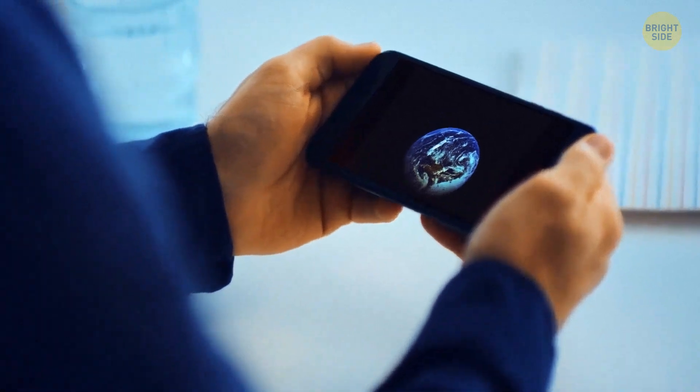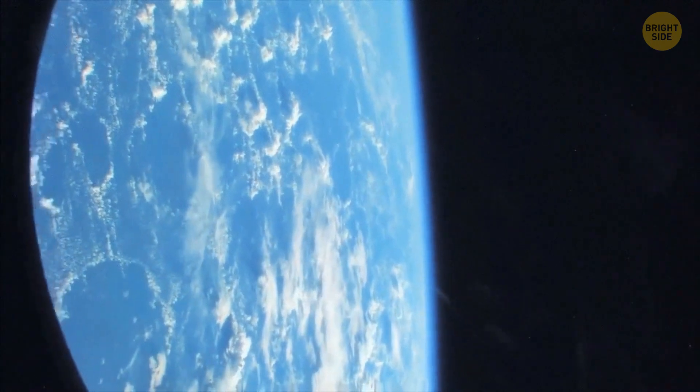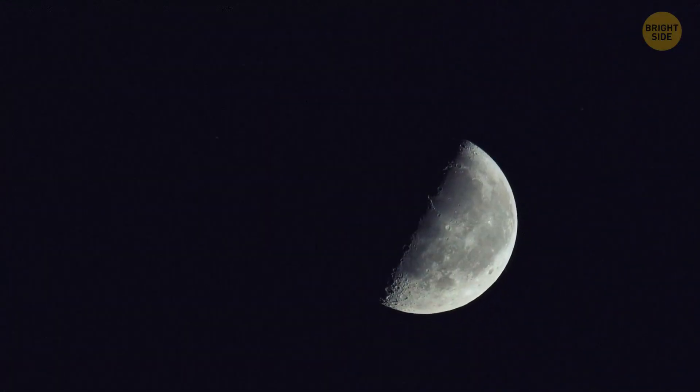When you look at photos taken from spaceships or the International Space Station that show sunlit objects like Earth or the Moon, something seems wrong. Space looks too empty.